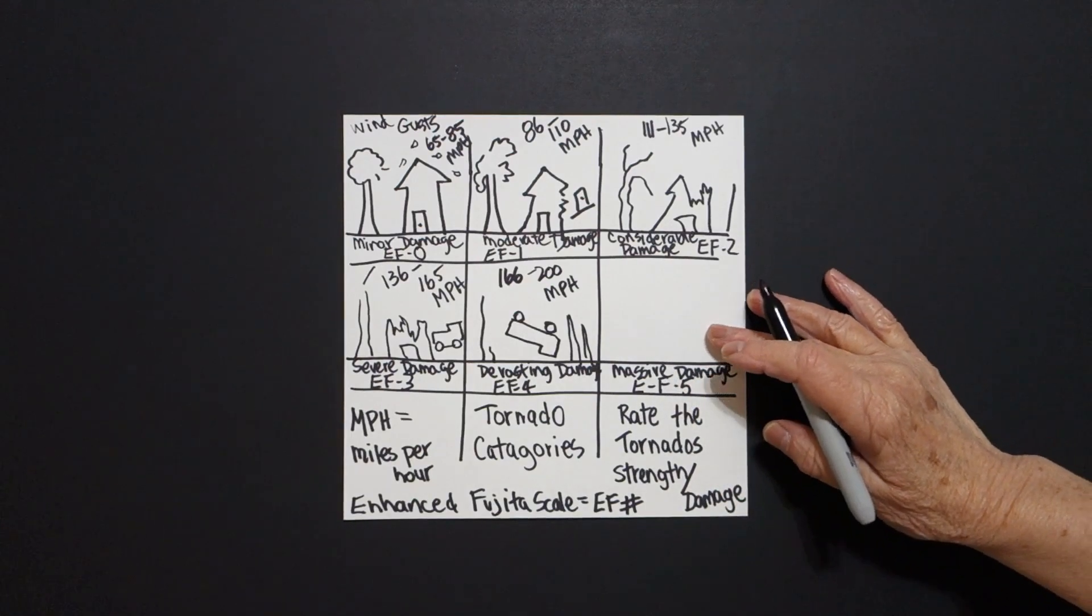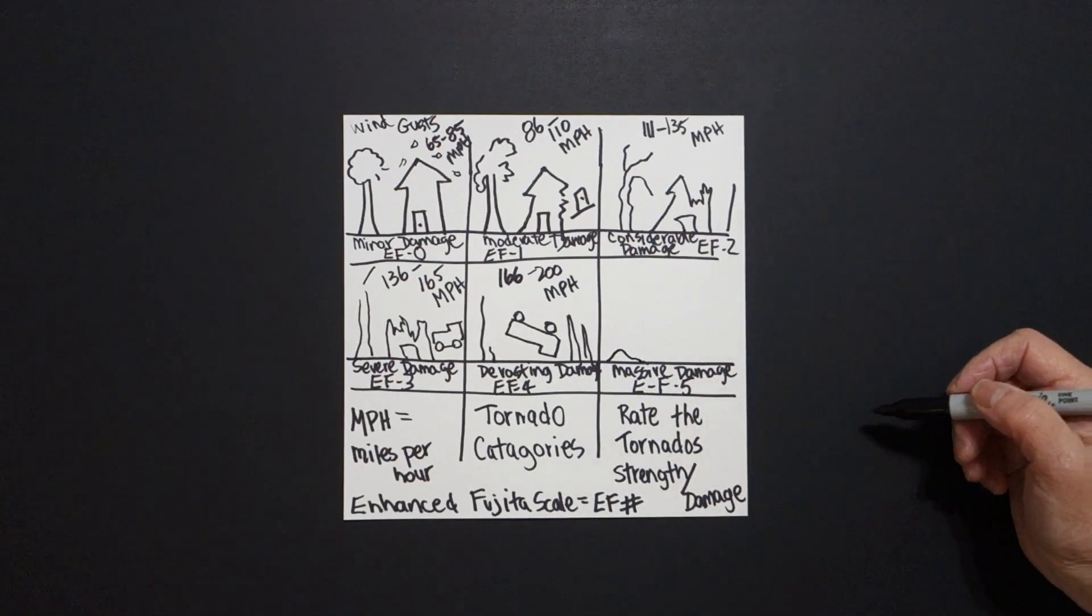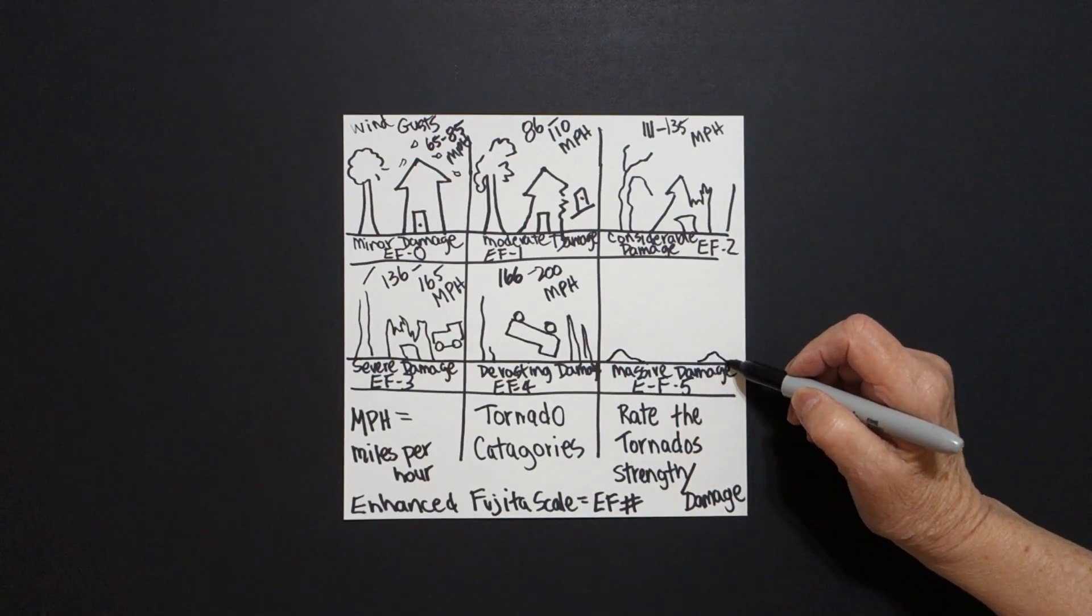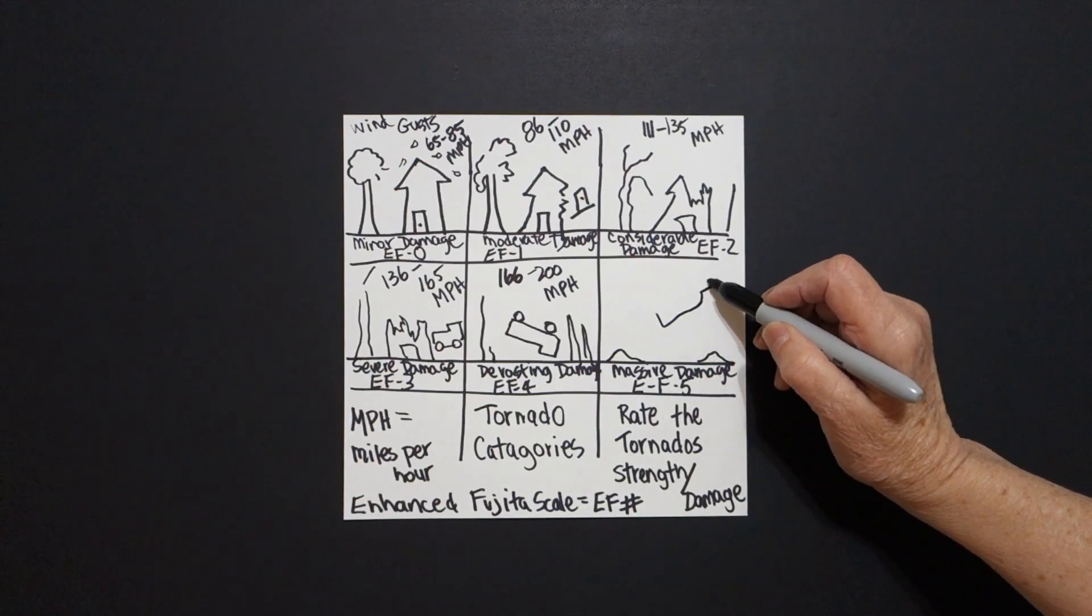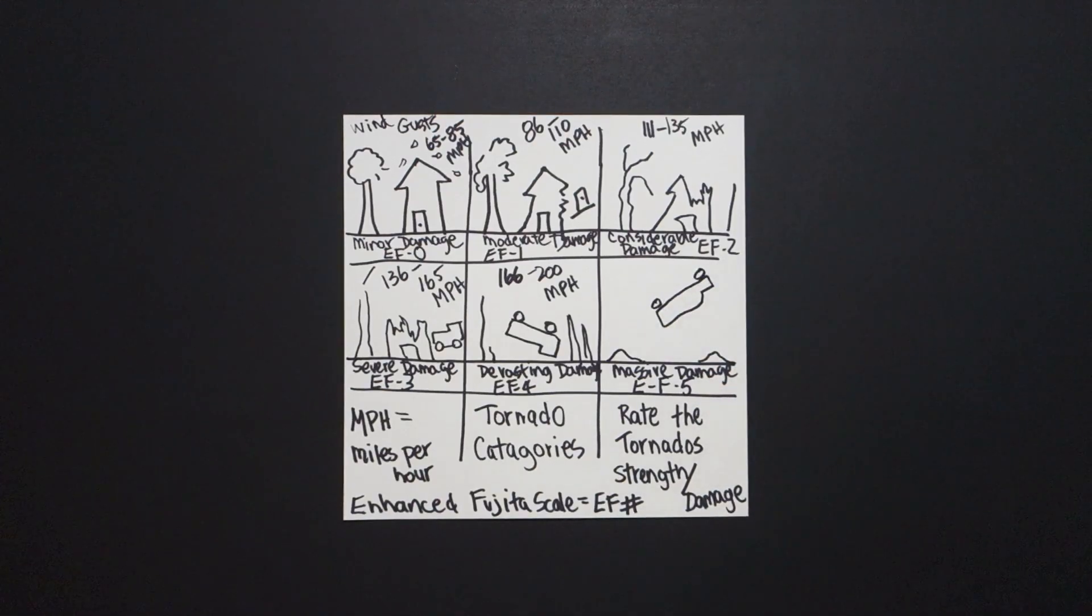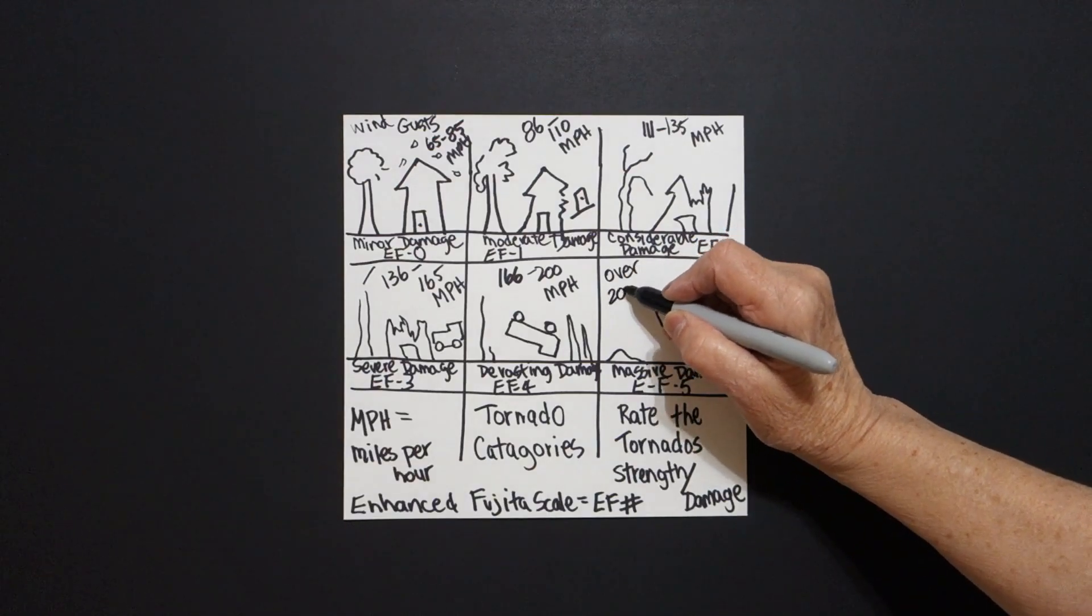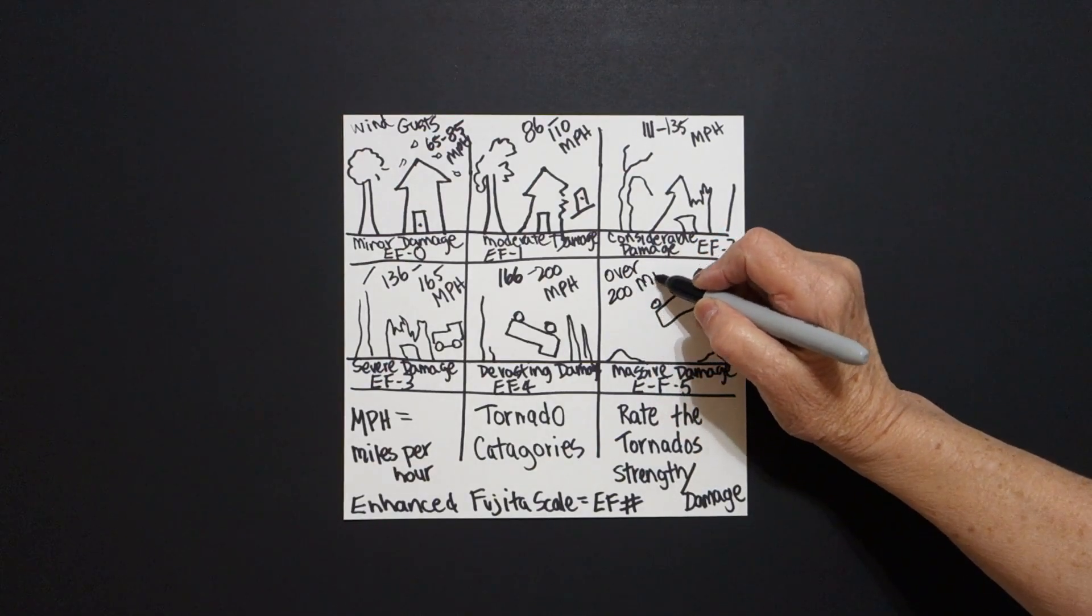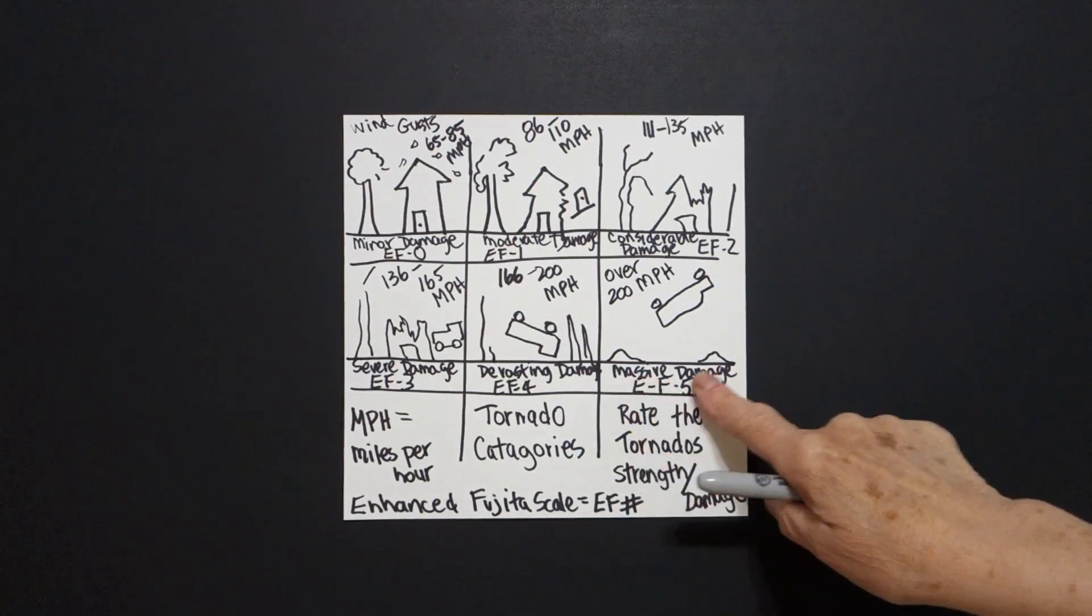Alright, massive damage. Little curve line, connect. Little curve line, connect. Straight line, straight line, straight line. Baby circle, baby circle. Over 200 MPH, miles per hour. Massive damage.